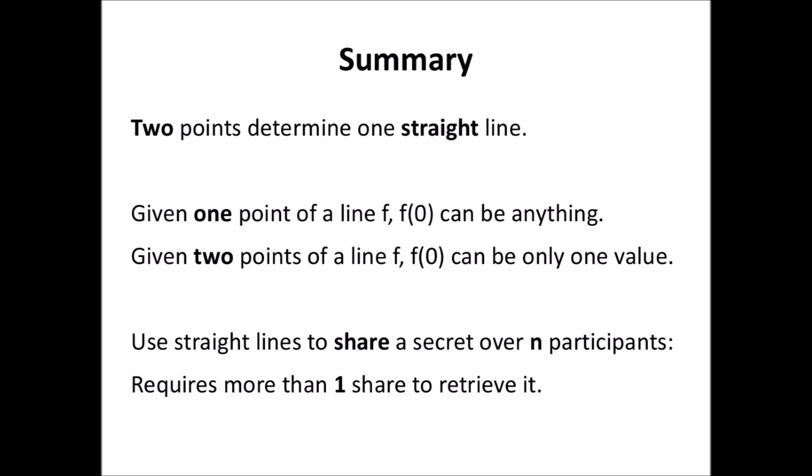Following up on our summary: two points determine one unique straight line. If we use a straight line to share a secret over any number of participants or shares, at least two shares need to be combined in order to retrieve the secret.